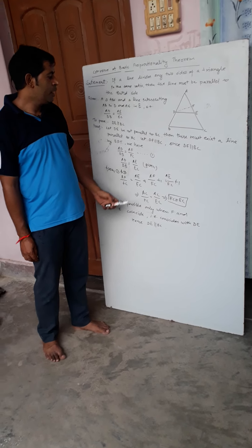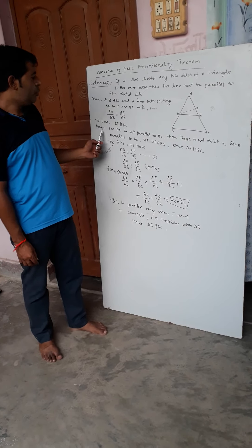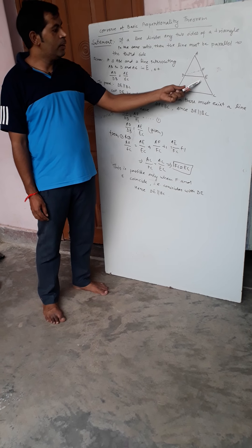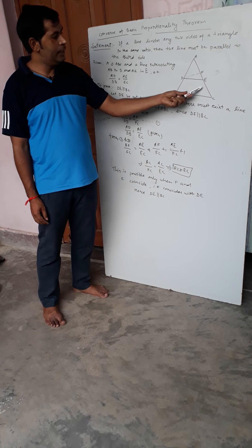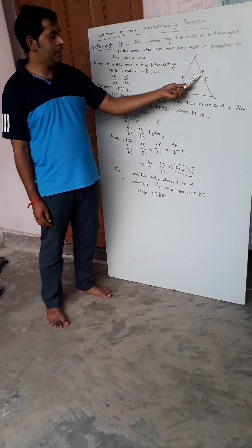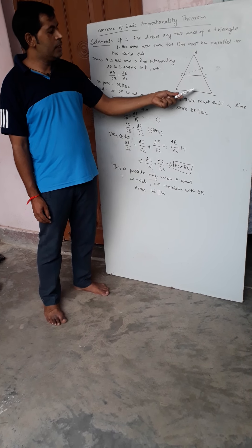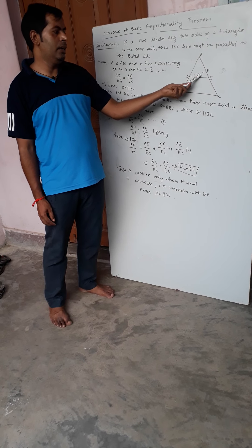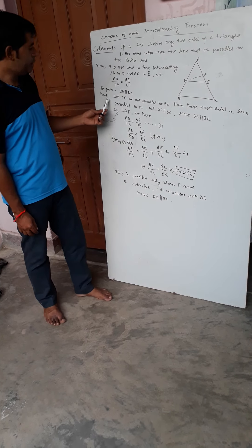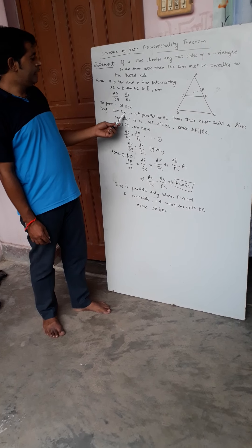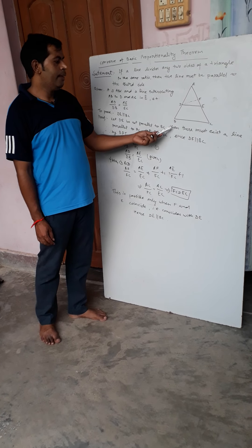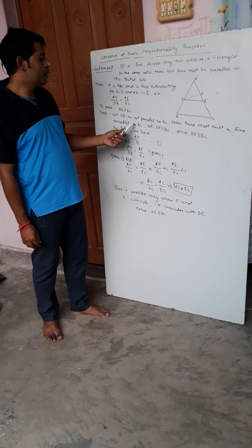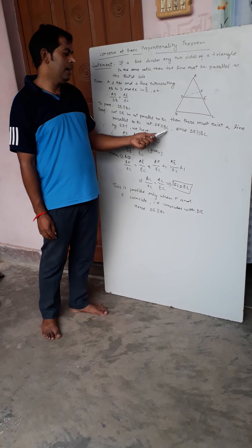Let us assume DE is not parallel to BC. Let F be a point on AC such that DF is parallel to BC. So our assumption is: let DE be not parallel to BC. Then there must exist a line through D parallel to BC — let DF be parallel to BC.